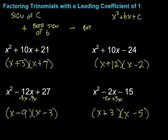If the sign of c is negative, then we're going to have a plus and a minus. So, if the sign of c is positive, then both signs will be whatever the sign of b is. And if the sign of c is negative, we're going to have plus and minus.